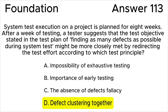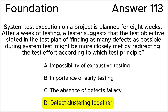All the other answers are wrong. Answer A is wrong because this principle does not directly guide the tester on where to focus the testing efforts based on observed defects. While it is true that exhaustive testing is impossible according to testing principle 2, it does not address redirecting efforts.